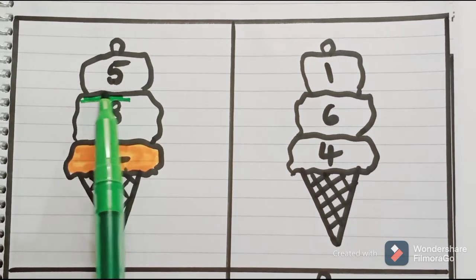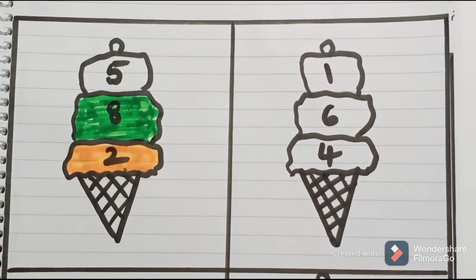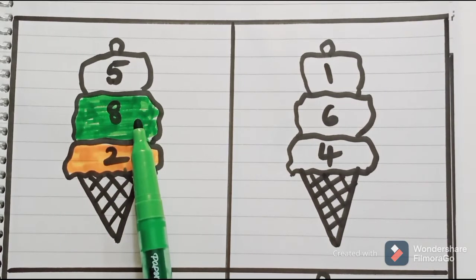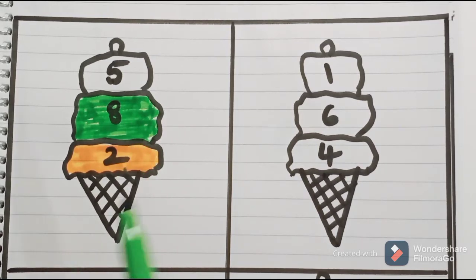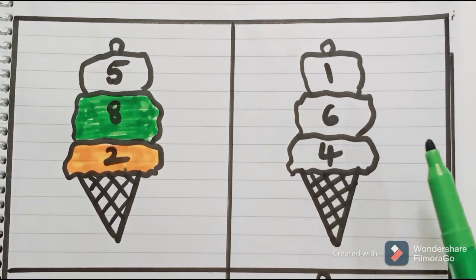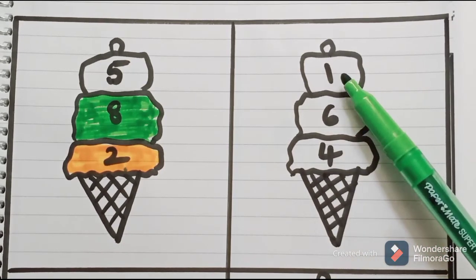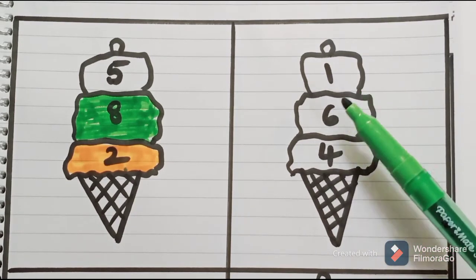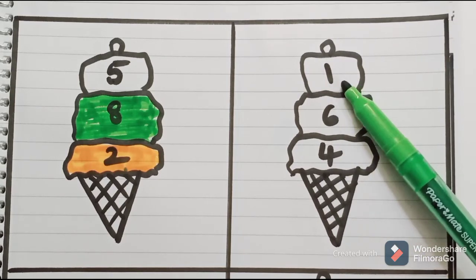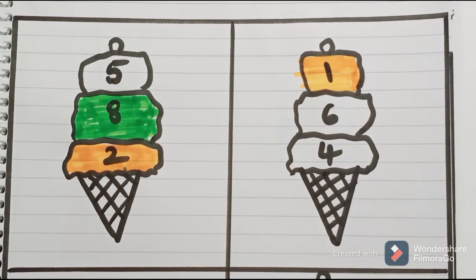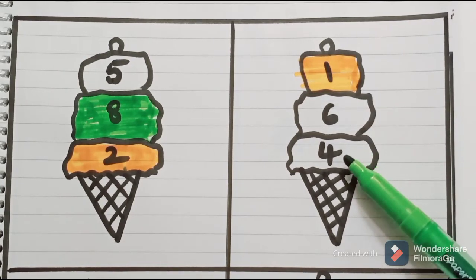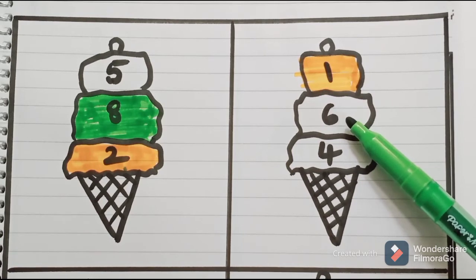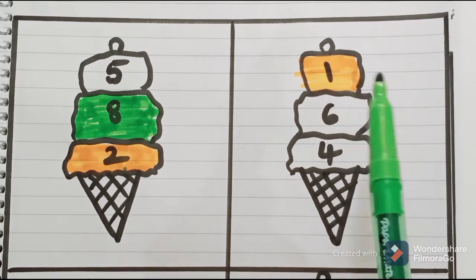The smallest numbers should be colored in orange and the greatest numbers should be colored in green. In the next ice cream, there are three scoops with numbers 1, 6, and 4. Which comes earlier? 1 is the number which comes earlier, so color it in orange. After 1, the number 4 comes; and after 4, 6 comes. The number which comes later is the greatest number — so color 6 in green.